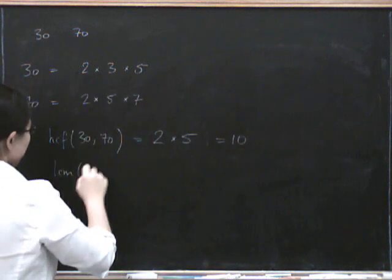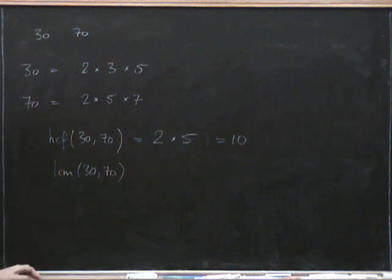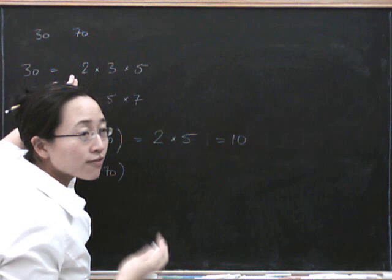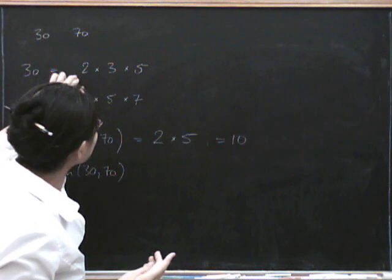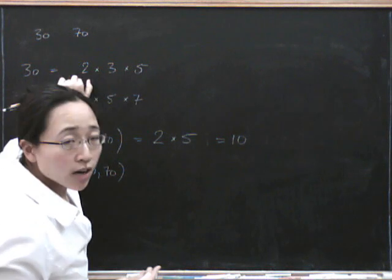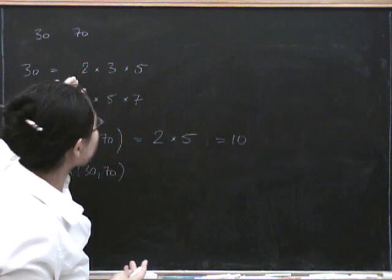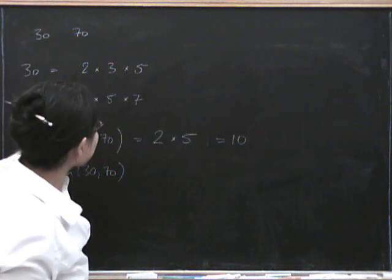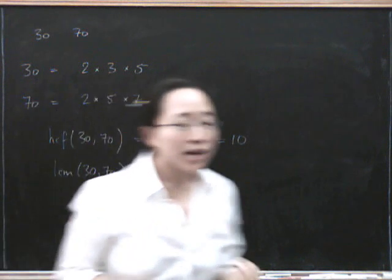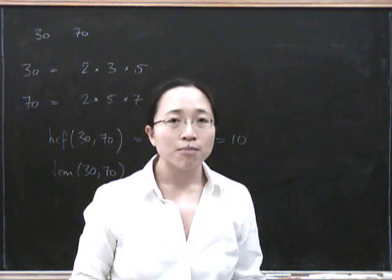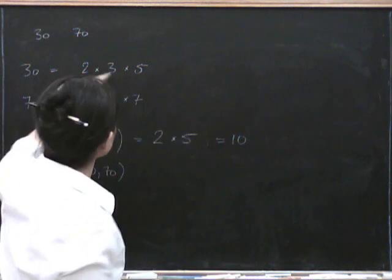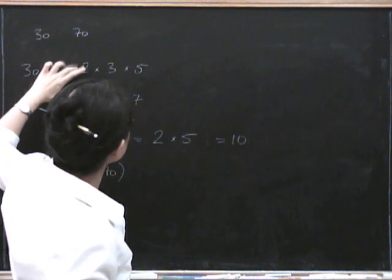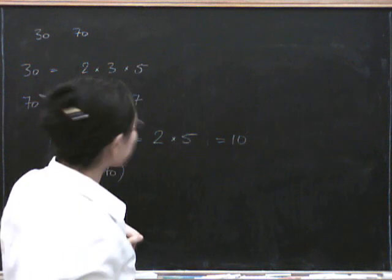What about the lowest common multiple? To be a multiple of 30, you've got to have as prime factors all of its factors. So whatever our lowest common multiple is, it's certainly got to have factors 2, 3, and 5. And whatever our lowest common multiple is, it's got to have 2, 5, and 7. So we've got to find the smallest number divisible by 2, 3, and 5, and also by 2, 5, and 7. But because we've got the same factors, we don't have to do them twice.